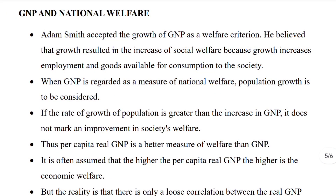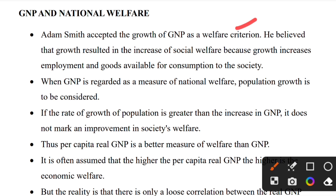GNP and national welfare: Adam Smith accepted growth of GNP as a welfare criterion. He believed that growth resulted in an increase in social welfare, because growth increases employment and goods available for consumption in society. When GNP is regarded as a measure of national welfare, population growth must also be considered. If the rate of population growth is greater than the increase in GNP, it does not mark an improvement in societal welfare. Therefore, per capita real GNP is a better measure of welfare than GNP.